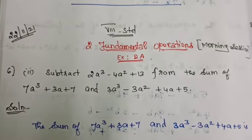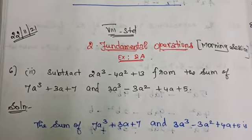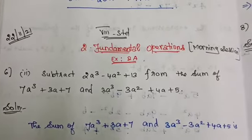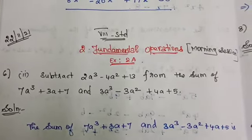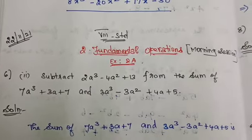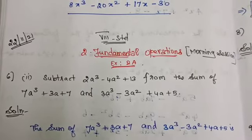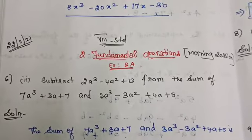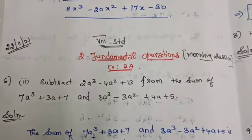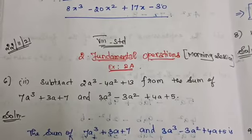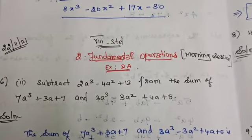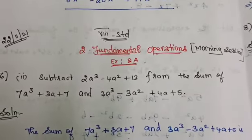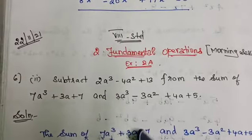Everything you've seen in the previous class: in addition and subtraction, common terms are added or subtracted. That means except the variable, only the numerical coefficient is added or subtracted. In subtraction, all the signs of the second expression after the subtraction symbol will be changed. This is the only concept of the exercise.